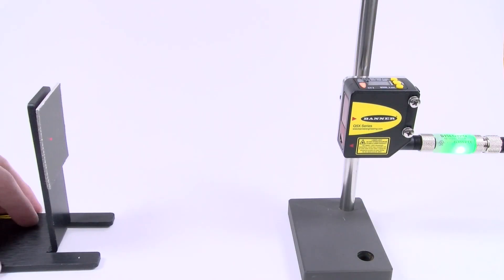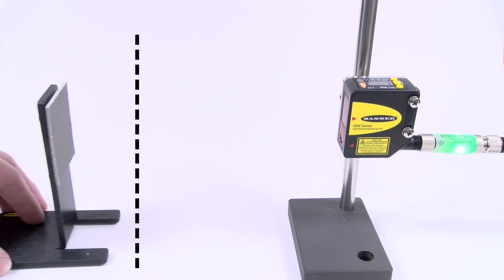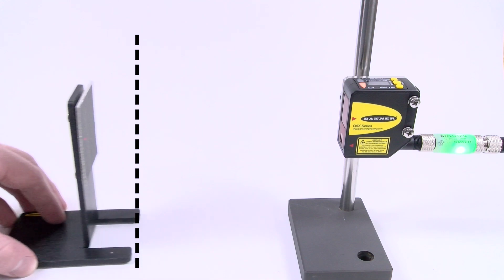A number will flash on the display showing the top switch point and then return to run mode. The switch point will automatically be set halfway between the two taught conditions.